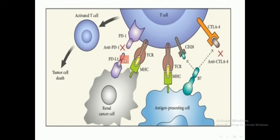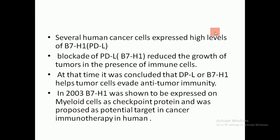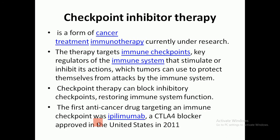Another figure demonstrates the checkpoint: PD-L1, and the B7 molecule with CD28 which provides the second signal in T lymphocyte activation, along with its inhibition by CTLA-4. Human cancer cells with high levels of PD-L1 suppress and reduce tumor cell growth in the presence of immune cells. It was also concluded that PD-L1 or B7 helps tumor cells evade anti-tumor immunity. In 2003, B7 was shown to be expressed on myeloid cells as a checkpoint protein and proposed as a potential target in cancer immunotherapy.